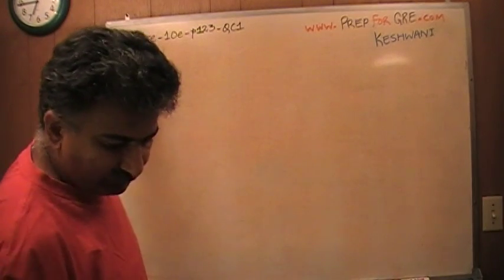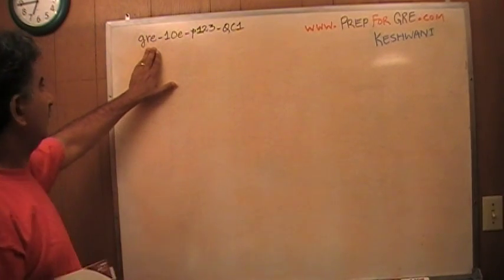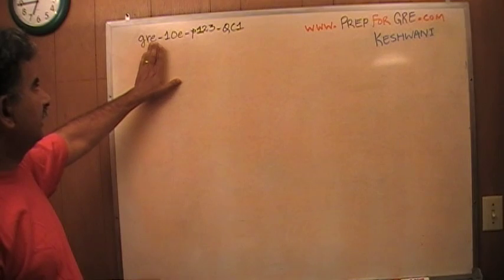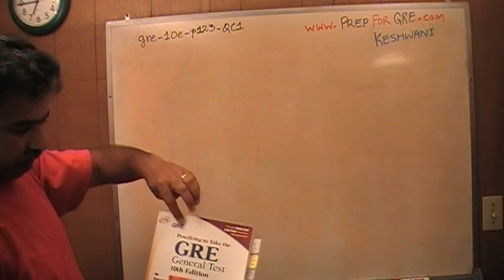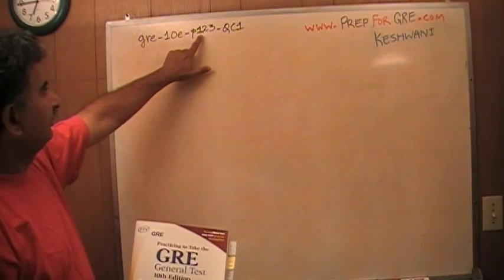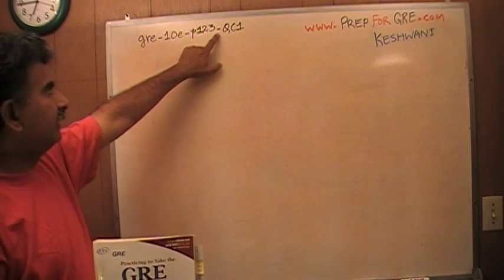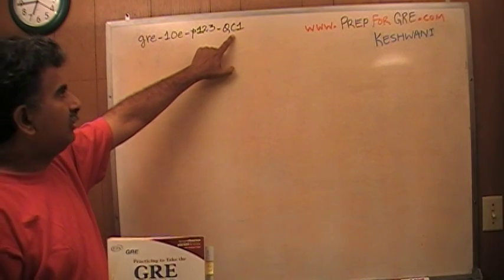So here we go, GRE, this is the tag that you want to use if you want to look for any given problem: GRE-10th edition-P123 for page number 123-QC.